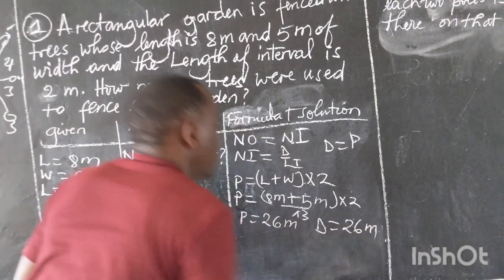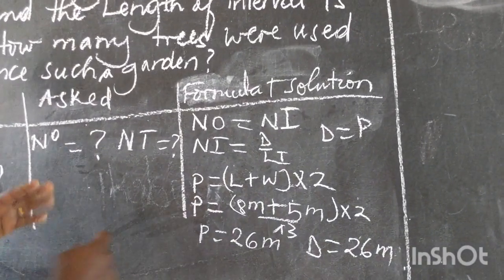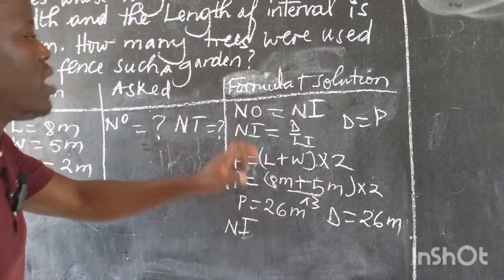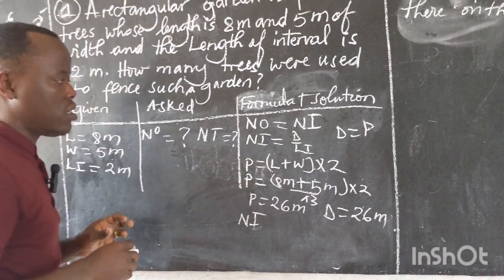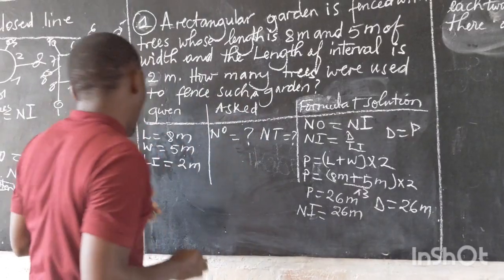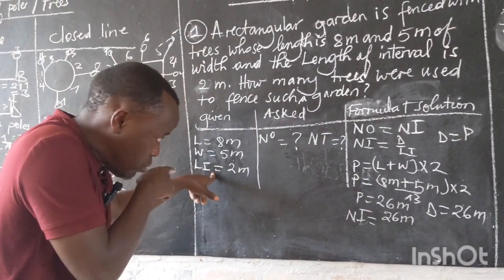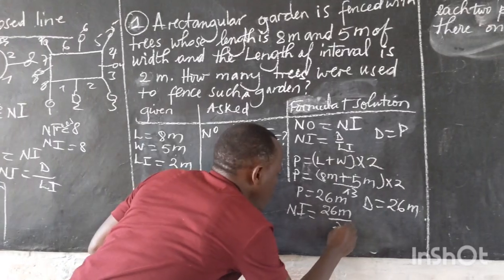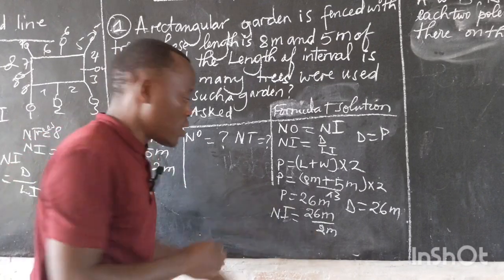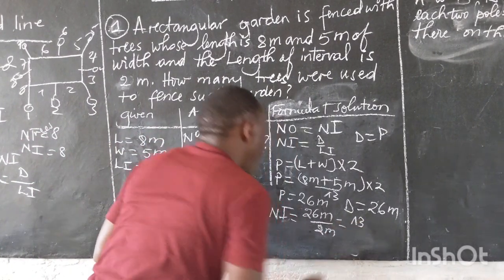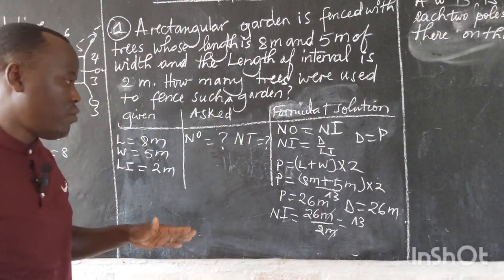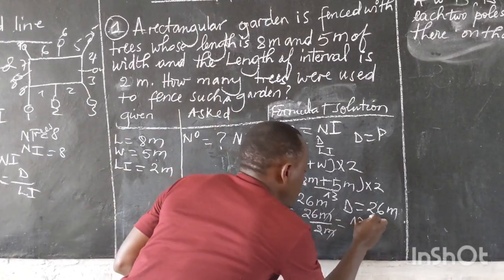Now we find the number of intervals. The formula says number of intervals equals distance divided by length of interval. Distance equals 26 meters and length of interval is 2 meters. So 26 divided by 2 equals 13. The meters simplify, and therefore we have 13 trees.